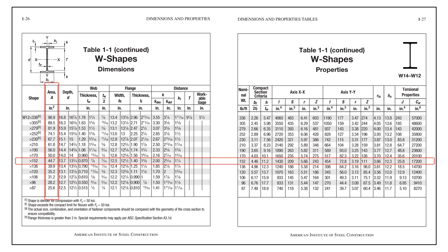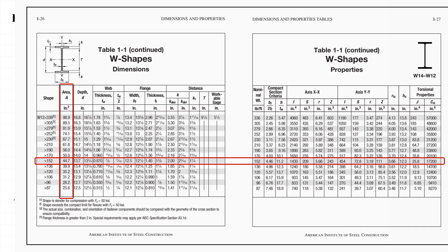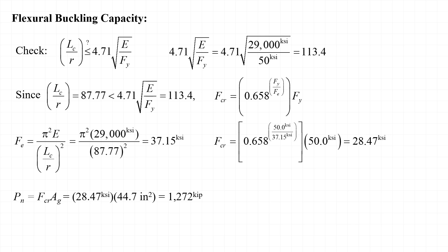From the AISC steel construction manual, the gross area of the W12x152 is 44.7 in². With that, we can calculate the nominal strength of the column as 1272 kips, and then find that the design strength φP_n = 1145 kips.